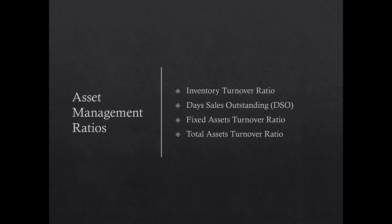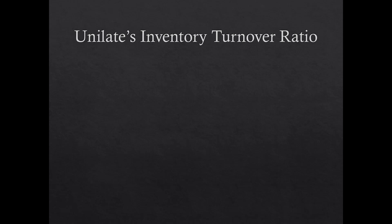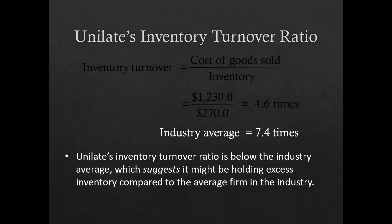Asset management ratios include four primary measures: inventory turnover, days sales outstanding (DSO), fixed asset turnover, and total asset turnover. Inventory turnover is cost of goods sold divided by inventory: $1.23 billion COGS divided by $270 million inventory equals 4.6 times. The industry average is 7.4 times, indicating an issue — inventory turnover is significantly below industry average.